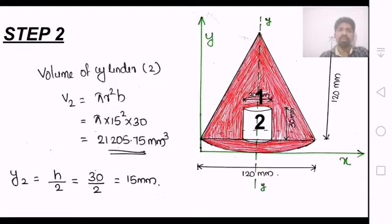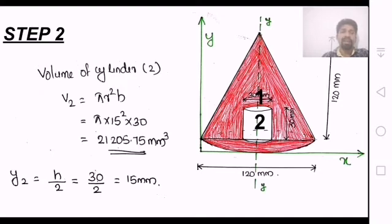For the cylindrical portion, the volume is pi r square h. The center of gravity is at h by 2 from the base. With height and diameter both 30 mm, y2 equals 30 by 2, which is 15 mm.